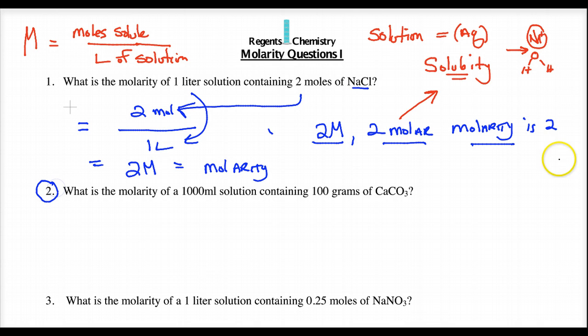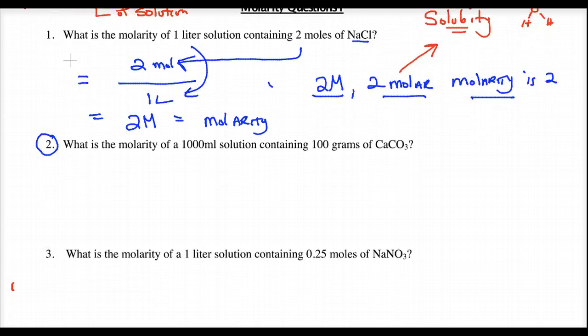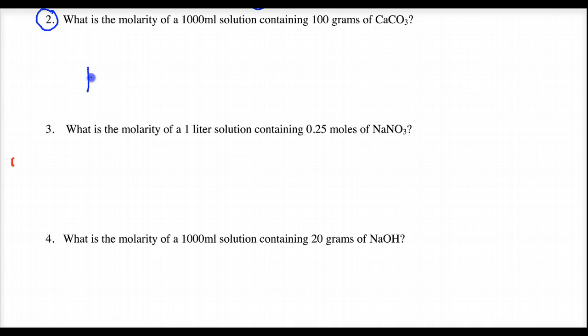Number 2 typically is a little more difficult because if you look at what they give you, they said, what is the molarity? We know molarity is moles of solute over liter of solution, but they're saying, what is the concentration, what molarity represents, if I've got a solution containing 100 grams of calcium carbonate? Well, there's no grams here, but you should know that grams and moles are interconvertible. So we've got to take our 100 grams of calcium carbonate, and we've got to convert this into moles.